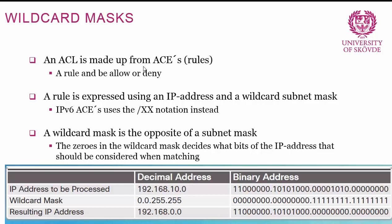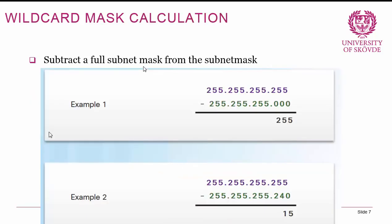A wildcard mask is basically the opposite of a subnet mask — the zeros in the wildcard mask decide what bits of the IP address should be considered when matching. To get the wildcard mask for a subnet, you take 255.255.255.255 and subtract the subnet mask. For example, for a slash 24 network the wildcard mask would be 0.0.0.255.